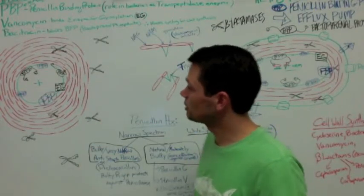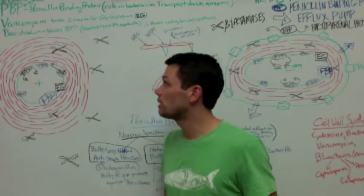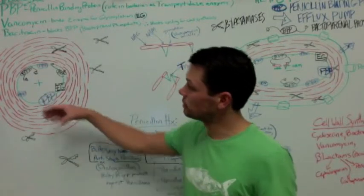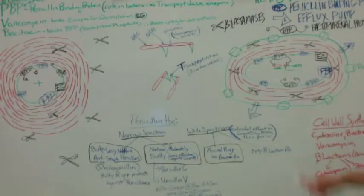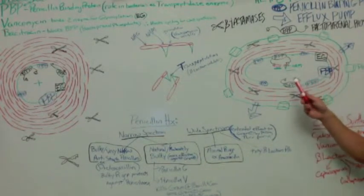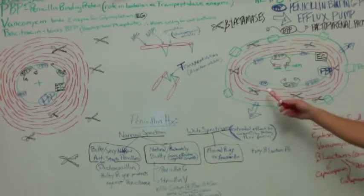Gram-positive bacteria have usually about 80 to 100 peptidoglycan layers, whereas your gram-negatives only have a few, maybe four to six peptidoglycan layers.